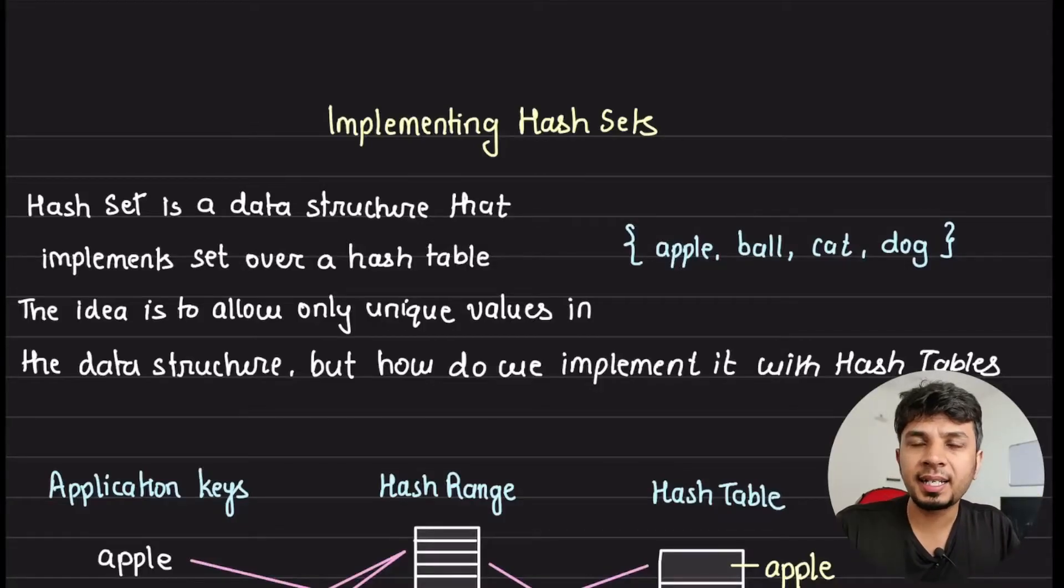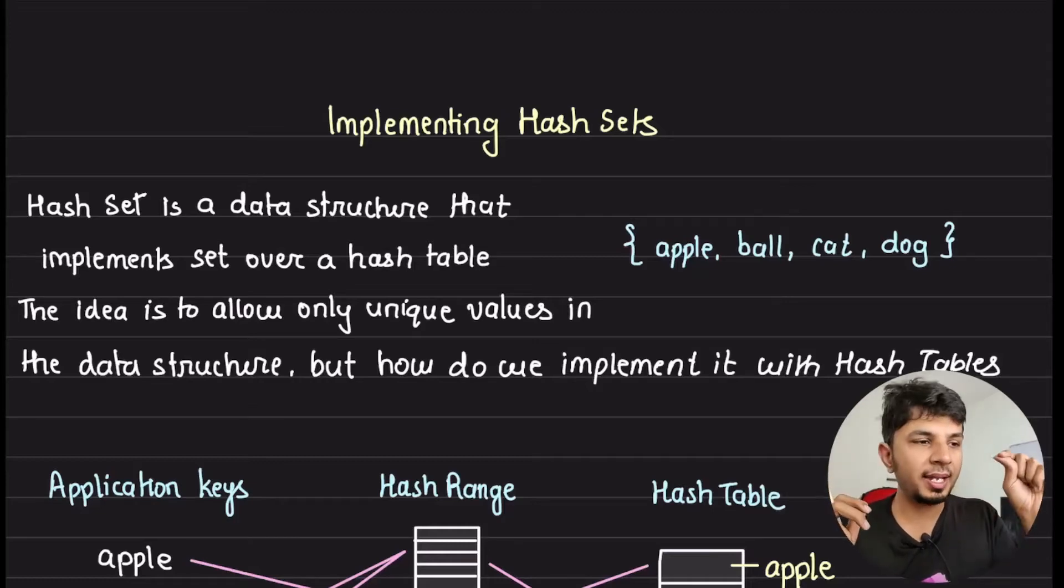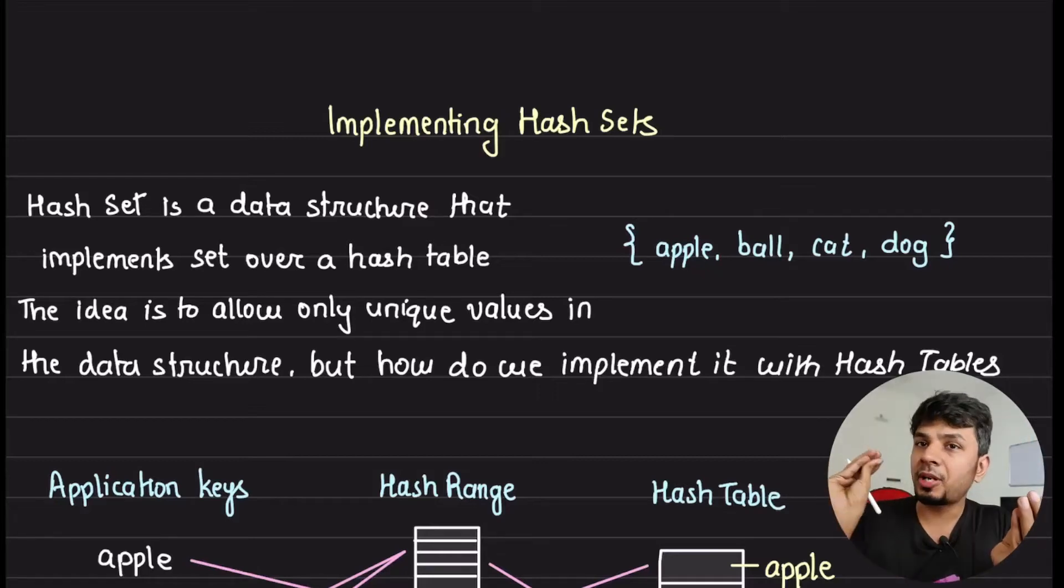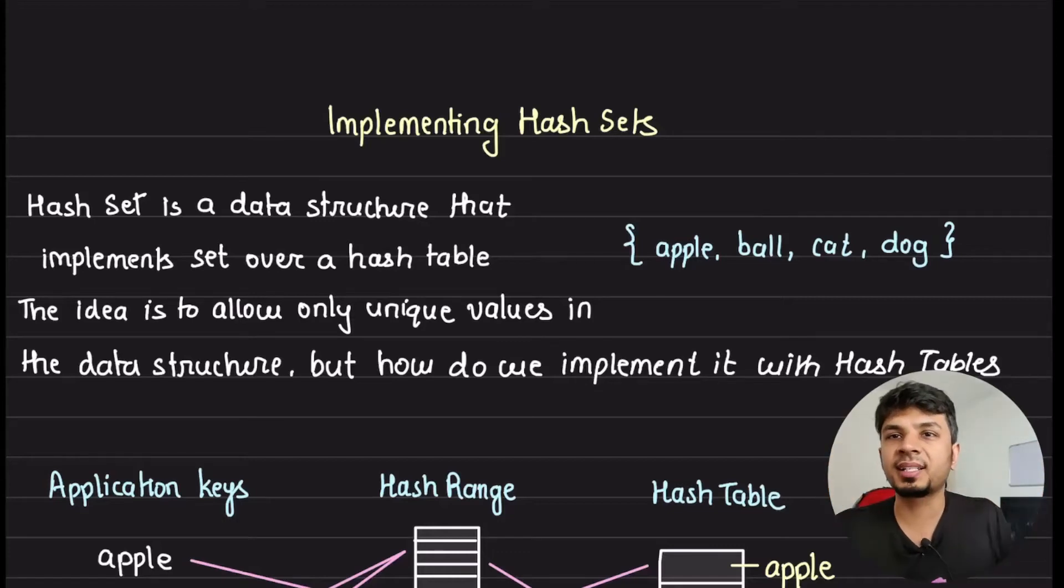So set is an amazing data structure that keeps track of everything unique. It powers operations like union, intersection and set difference, but the core idea is that it would try to keep everything unique in the set while discarding everything redundant. For example, if I'm trying to put apple, ball, cat and dog in my hash set, if I'm trying to insert another apple string in this hash set it would discard it. So at the end your set would only hold everything unique.